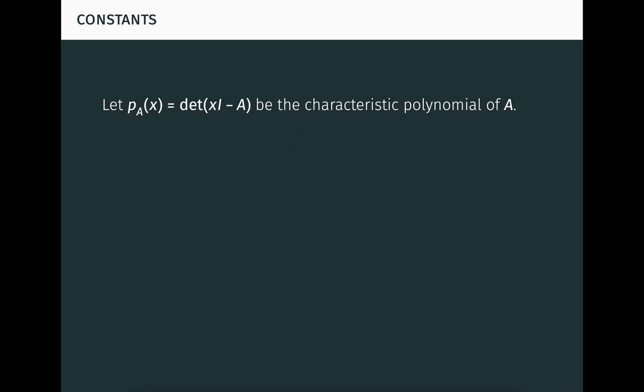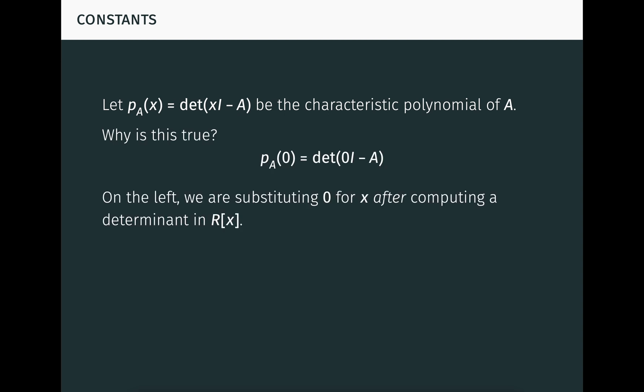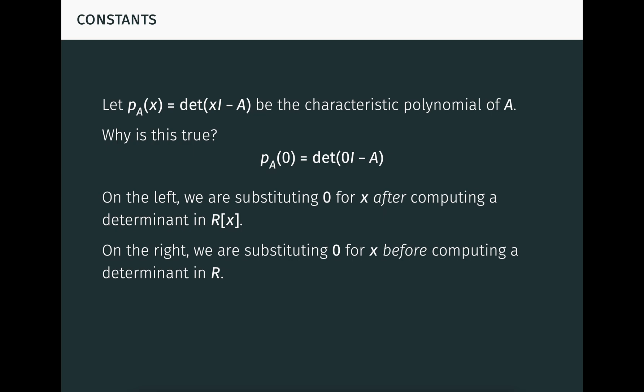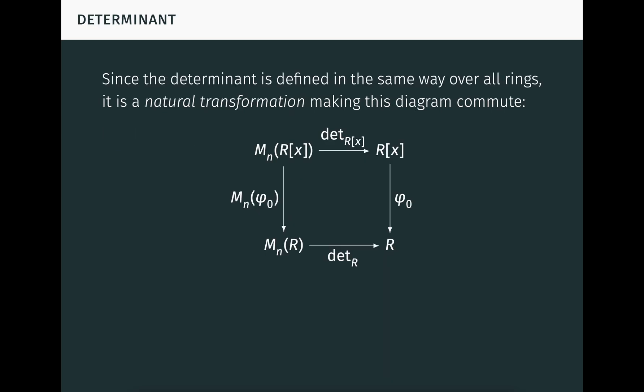Again, let P_A be the characteristic polynomial of the matrix A over R. Recall we're trying to explain why this equation is true. On the left-hand side, we're substituting zero for x after computing a determinant in the polynomial ring R[x]. On the right-hand side, we're substituting zero for x before computing a determinant in R. The question is, why do these agree? Well, since the determinant is defined in the same way over all rings, for example by the Leibniz formula, it's a natural transformation, making this diagram commute.